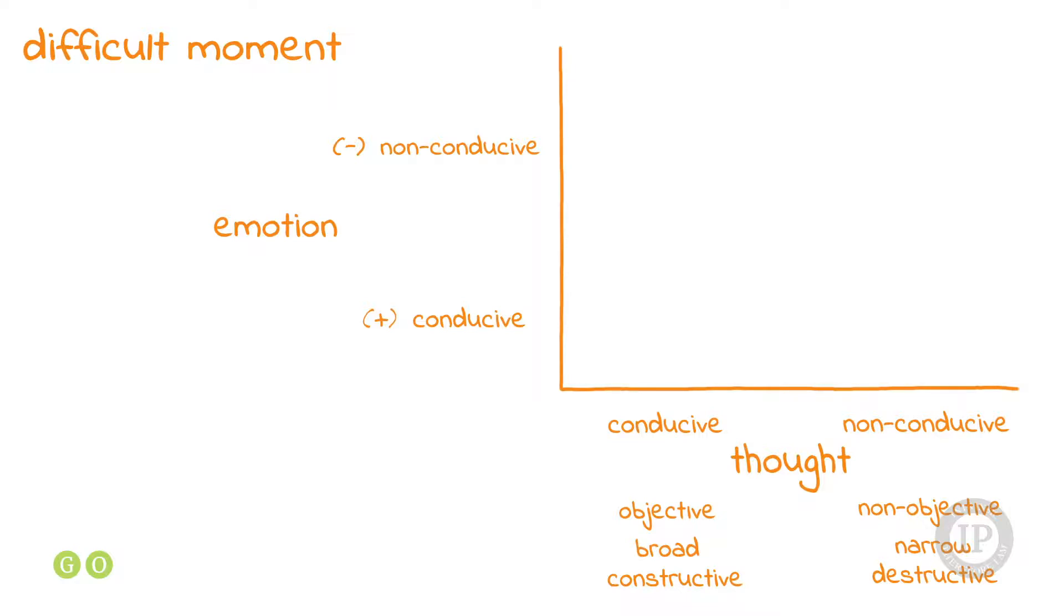When you analyze a difficult moment and try to determine where did your experience fall on these two dimensions, you could often see some combinations that let you understand better. If something is happening that is difficult and you experience it with more positive emotion and in an objective, broad, constructive way, you will tend to have the most positive or the experience that makes it the easiest to cope with whatever situation.